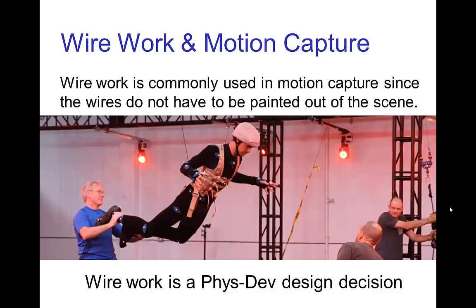This wire work is also commonly used in motion capture because it's even simpler in that with motion capture, you don't have to paint out the wires in the scene as you do with live action. Now, wire work tends to distort the timing in jumps in that the characters spend much more time in the air than they would given the height of their jumps. But this is a design decision. So in Crouching Tiger, Hidden Dragon, the idea is that the kung fu masters are able to essentially manipulate the laws of physics and that gives them a somewhat magical aspect.